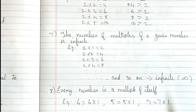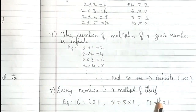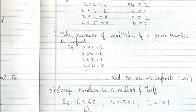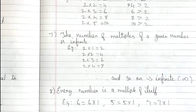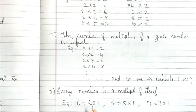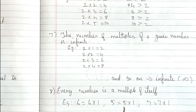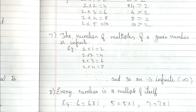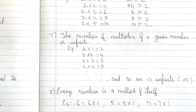Eighth: Every number is a multiple of itself. For example, in the 6 times table, 6 ones are 6; in the 5 times table, 5 ones are 5; in the 7 times table, 7 ones are 7. So every number is a multiple of itself.